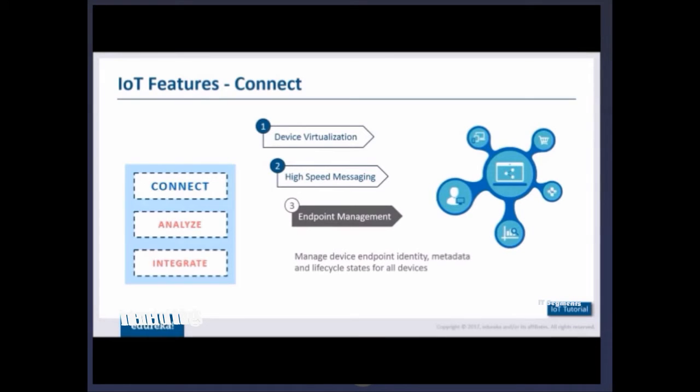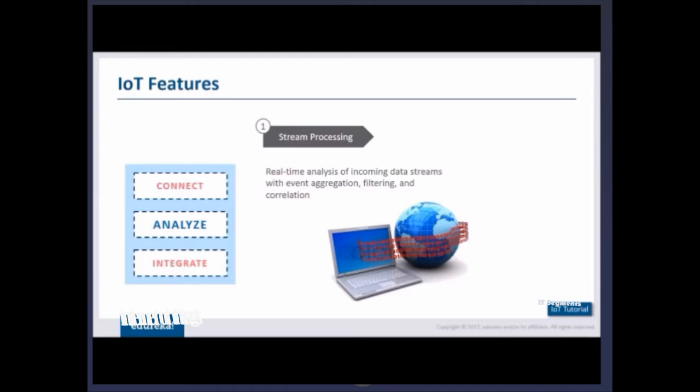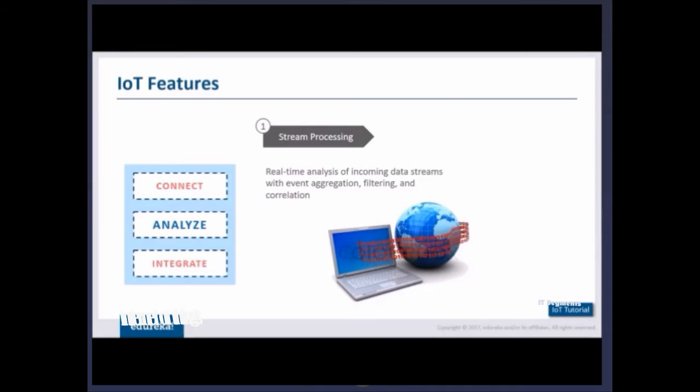Coming to the next feature, analyze. The first thing you need to do for analysis is stream processing. If the data coming from the device is not on a real-time basis, my system is of no use. There's no use if I tell my system to switch on the AC and it's not turned on by the time I reach. Real-time analysis of incoming and outgoing data must be done with respect to different aggregations, filtering, correlations, and processing.